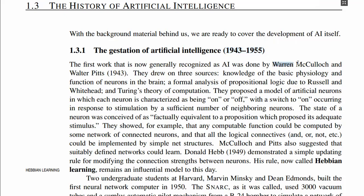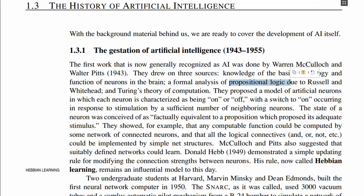In 1943, Warren and Walter proposed a model of the artificial neuron, and their work is recognized as the first work in artificial intelligence. In this model of the proposed artificial neuron, it was based on knowledge from three different sources: the basic psychology and the functions of the neuron in the human brain, the work in the area of propositional logic, and the Turing theory of computation.